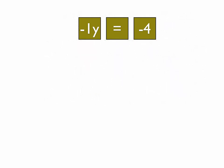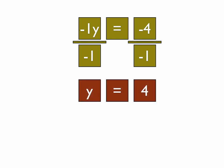Let's get rid of everything else. So now we have negative 1y equals negative 4, and we divide both sides by negative 1. When you divide negative 4 by negative 1, a negative divided by a negative is a positive, and our answer is 4.